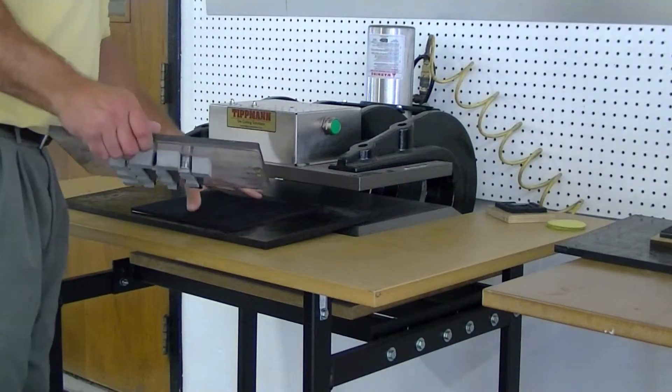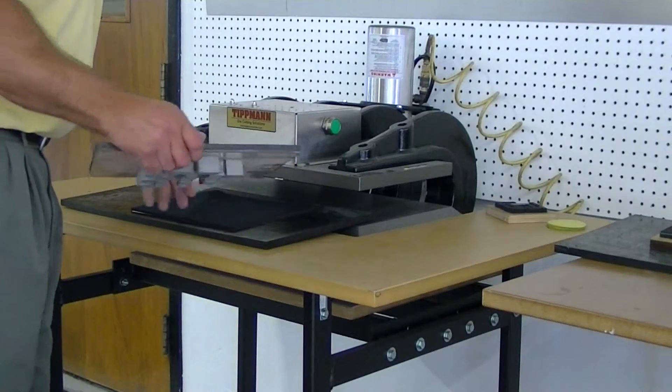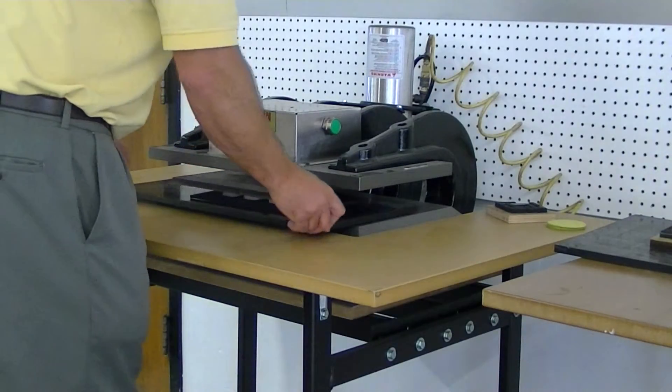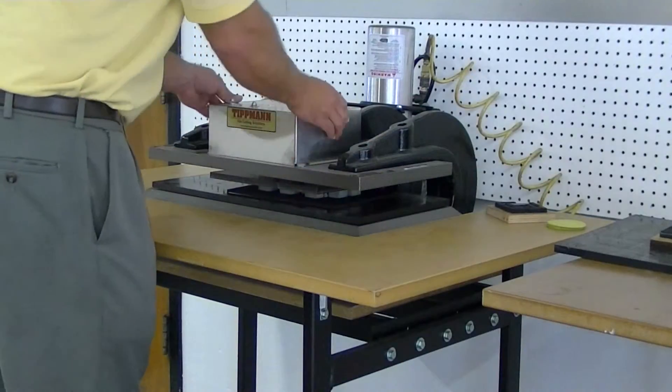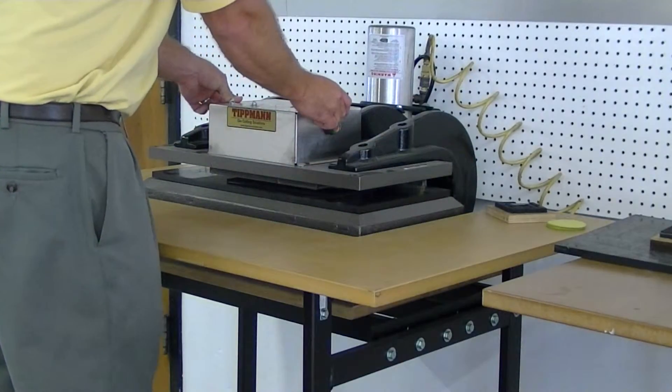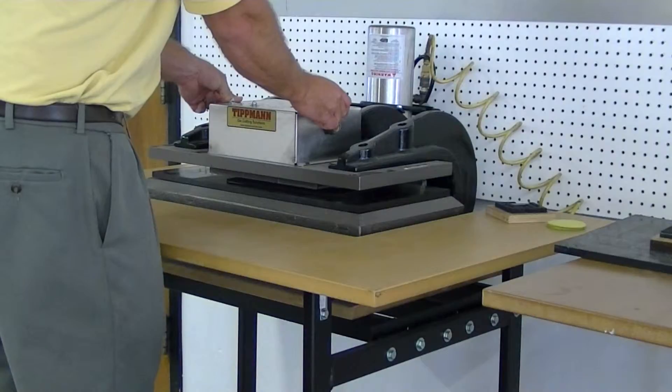So you're going to set the paper down, put the material on top of the paper, then set your die on top of that. Slide it in. Hold it for a moment to get a nice clean cut.